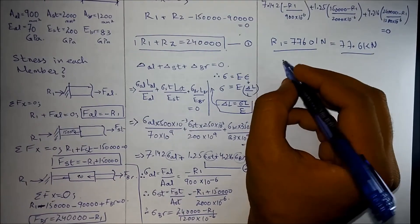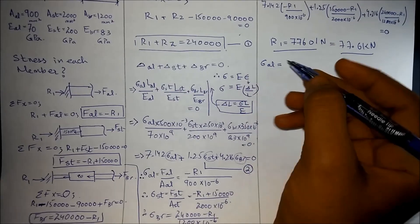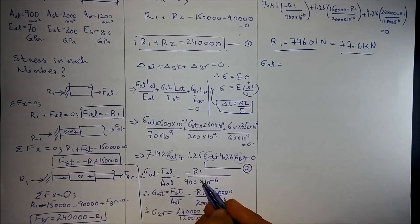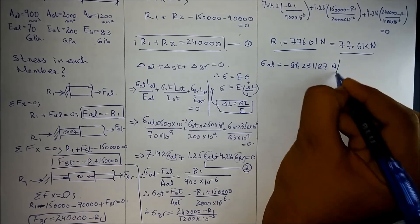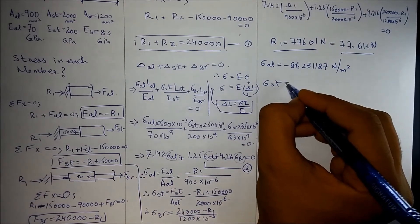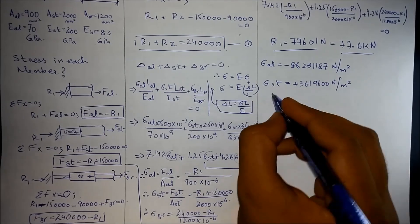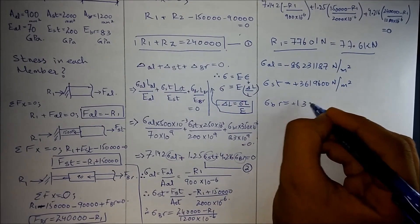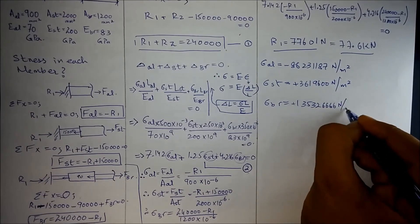For the stress in each member, we substitute the value of R1 into each equation. We get the stress in aluminium, stress in steel as approximately +36,196,000 N/m², and the stress in brass as approximately +135,326,000 N/m².